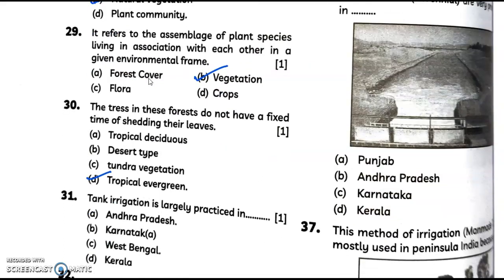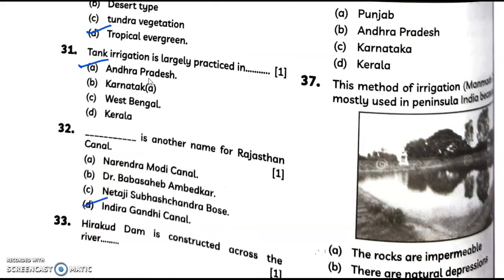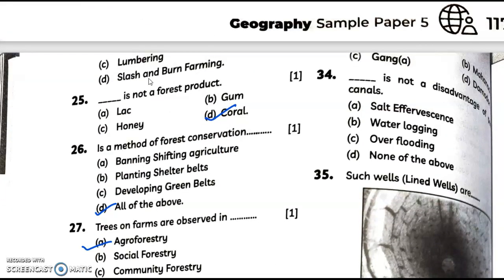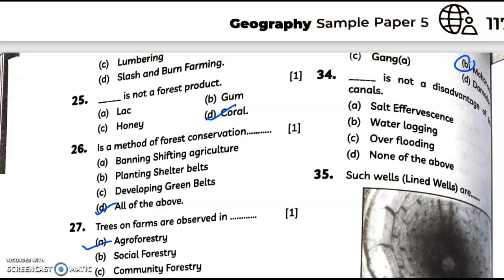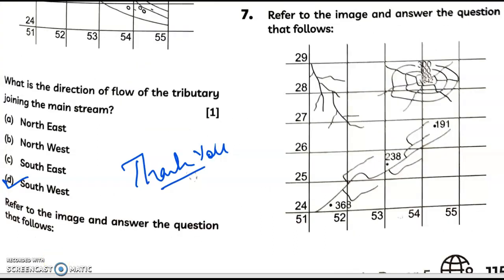Tank irrigation is largely practiced in answer A, Andhra Pradesh. Dash is another name for Rajasthan canal - answer is option D. Hirakud dam is constructed across the river... answer is, you can see the options, answer is option B, that is Mahanadi. You can't see it, but answer is Mahanadi. Now we will move to question 30: such line wells are used for irrigation. Thank you for watching my video. If you found it helpful, please like and subscribe my channel.